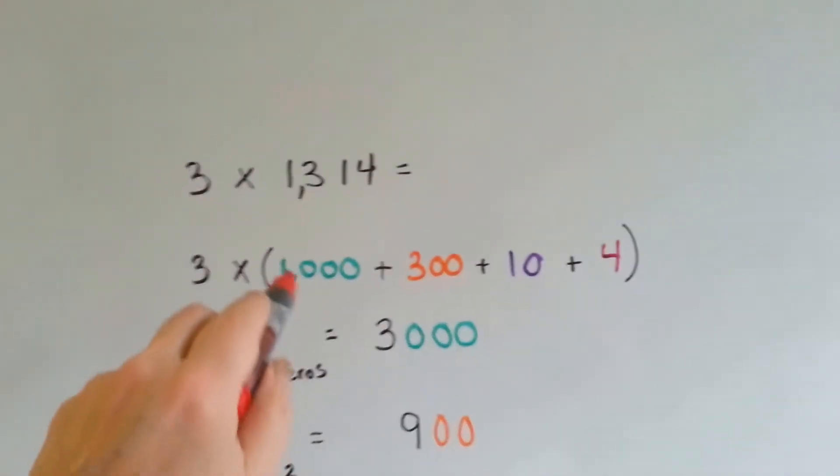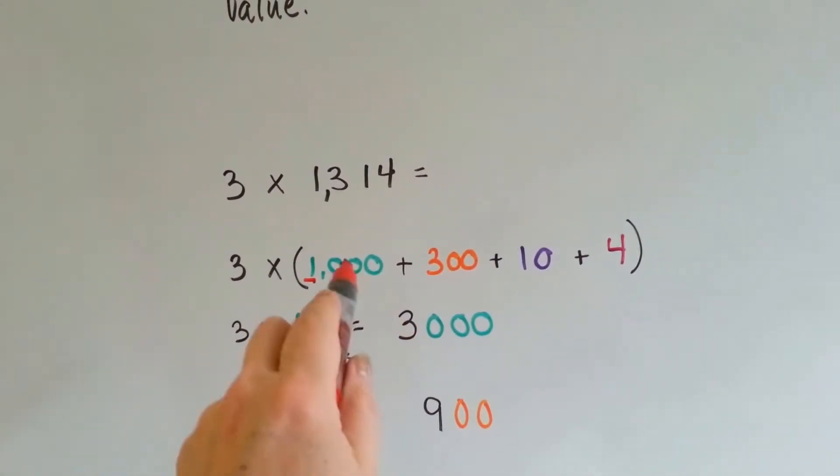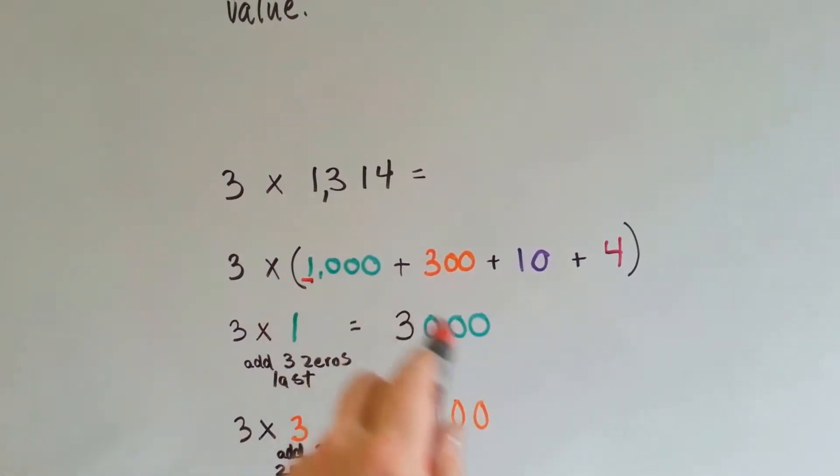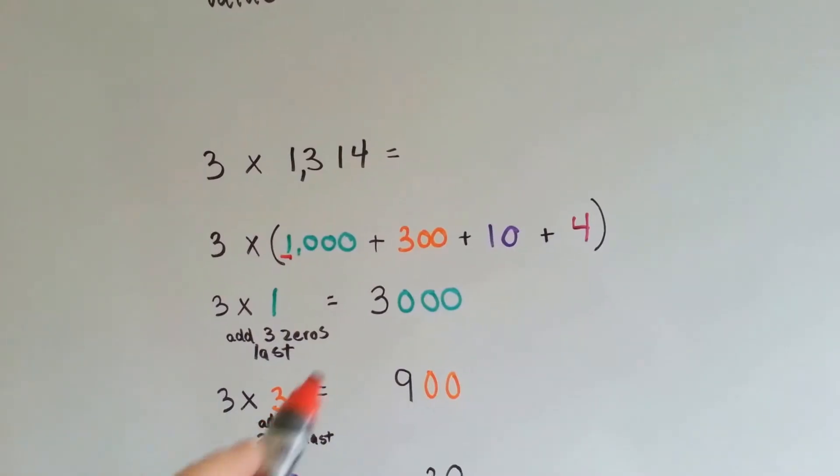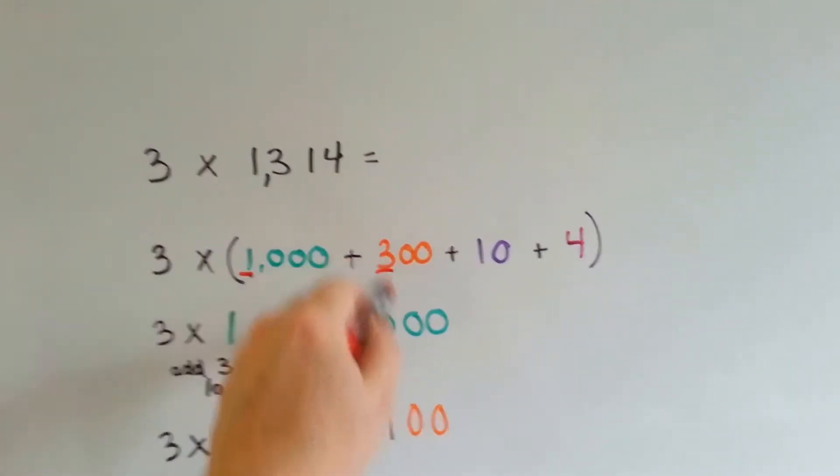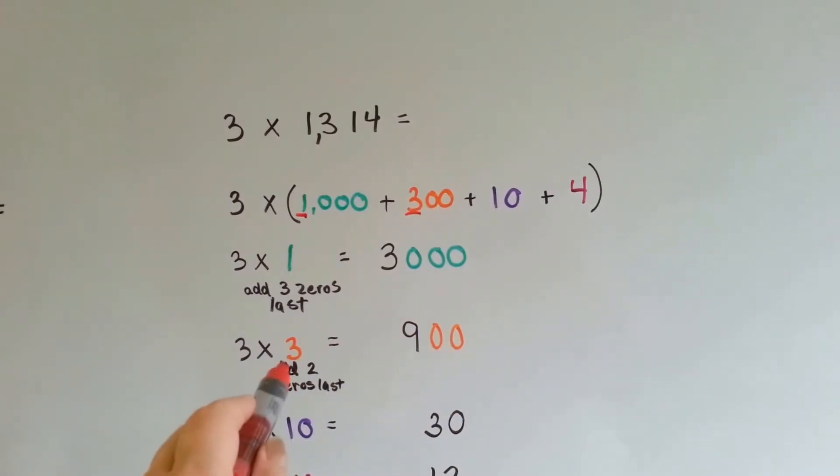3 times 1, which is right here, is 3. And then we add the three zeros. We add the zeros afterwards. 3 times 3, here's the 3, is 9, and then we add the two zeros afterwards.